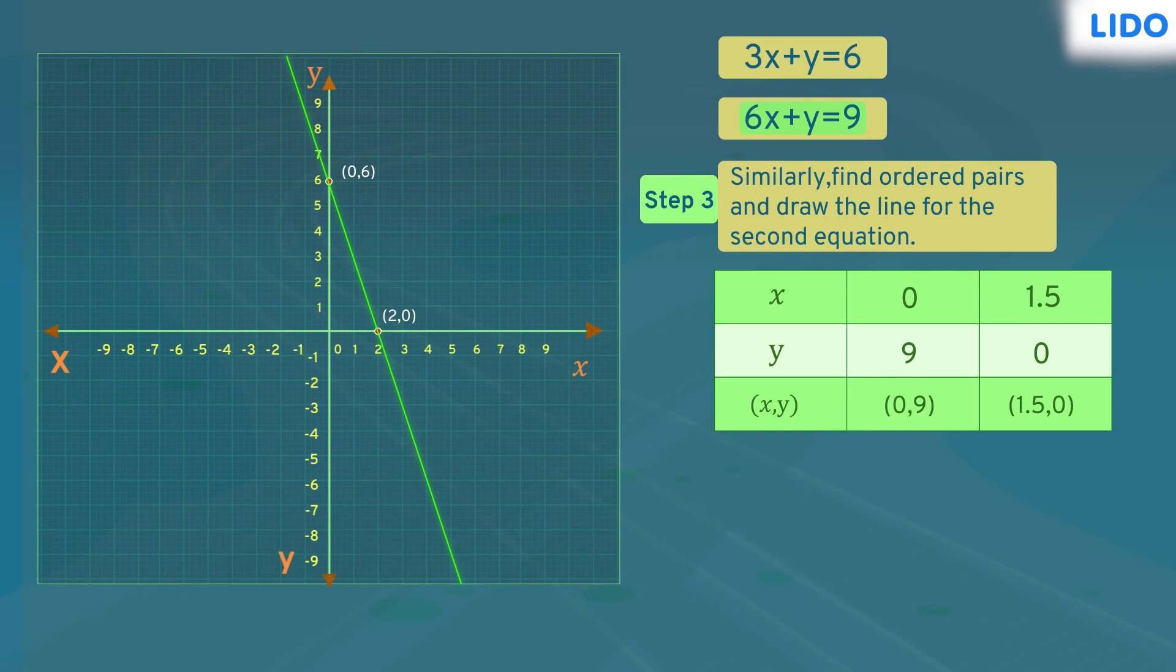Now we have the ordered pairs for the second equation. The first point is (0,9) and the second point is (1.5,0). Let's connect these points using a line. Now we have the graph of both the equations.